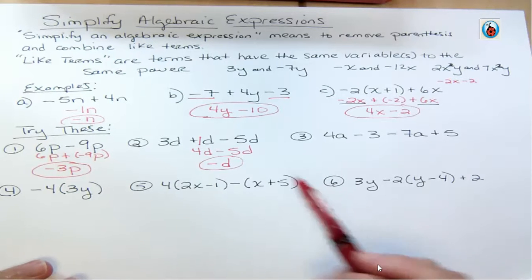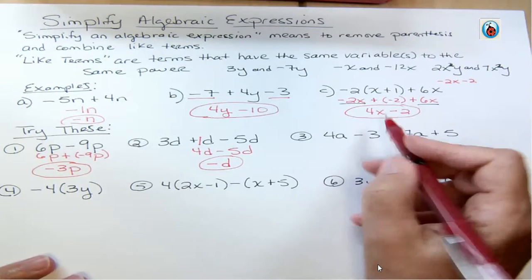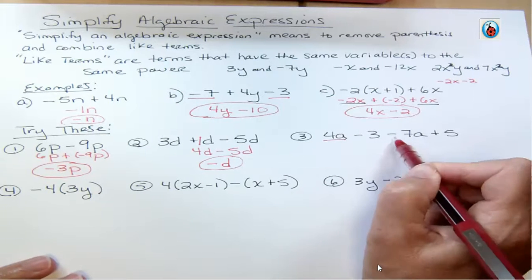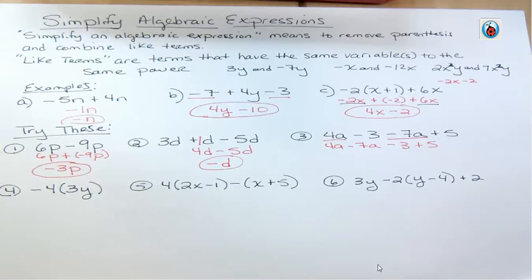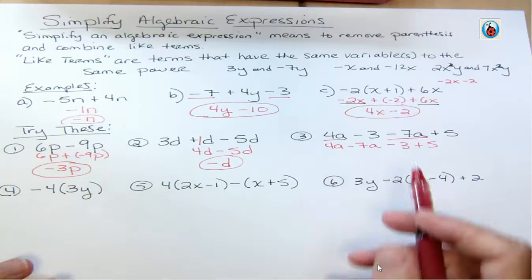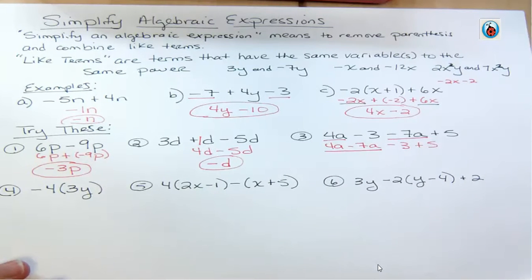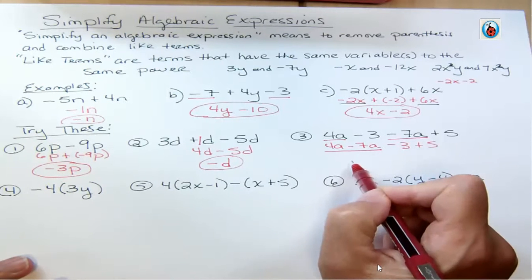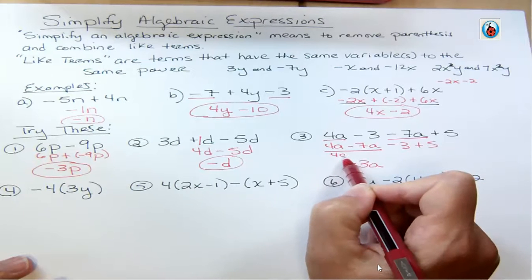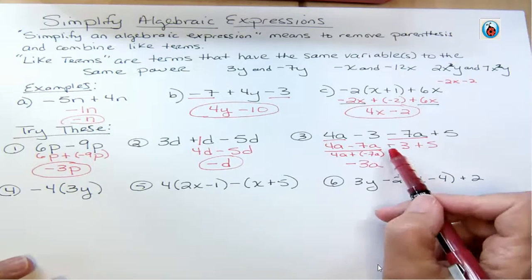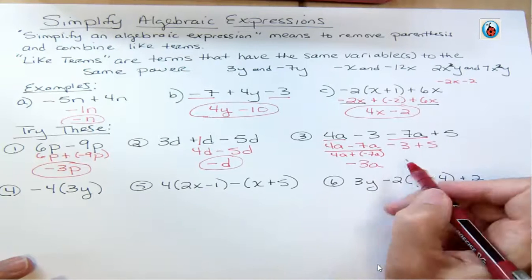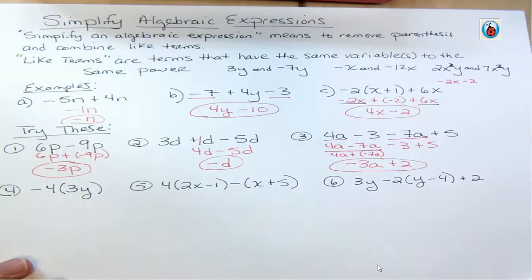For number three, you can rewrite to group like terms: 4a − 7a, and then −3 + 5. Remember to bring the sign in front along with the term — it's minus 7a, not just 7a. If I have 4 and take 7 away, I'm in the hole by 3, so that gives −3a. For the constants, I have −3 and +5 — more positives by 2 — giving +2. The final answer is −3a + 2; we can't combine those because one has a variable and one doesn't.